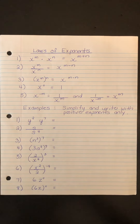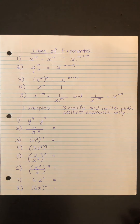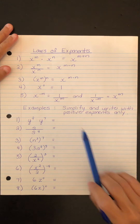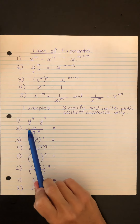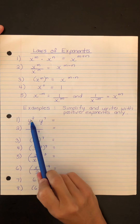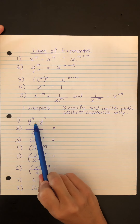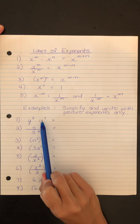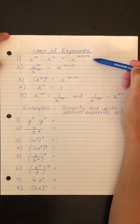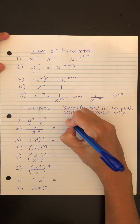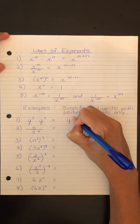We're going to look at some examples now. The instruction is to simplify and write with positive exponents only. For the first one, we have y to the 7. The implied operation is multiplication, so y to the 7 is being multiplied by y squared. This is just the first rule — we simply add the exponents together.